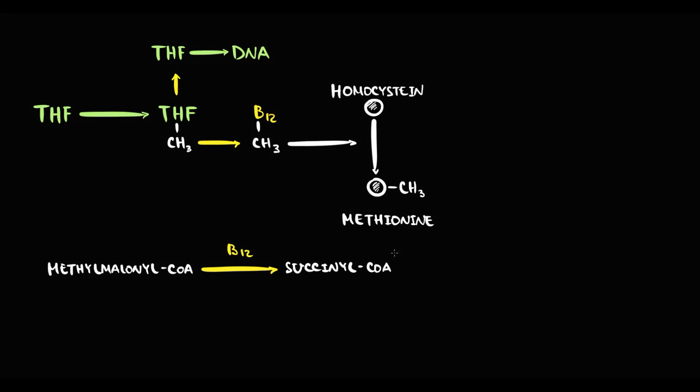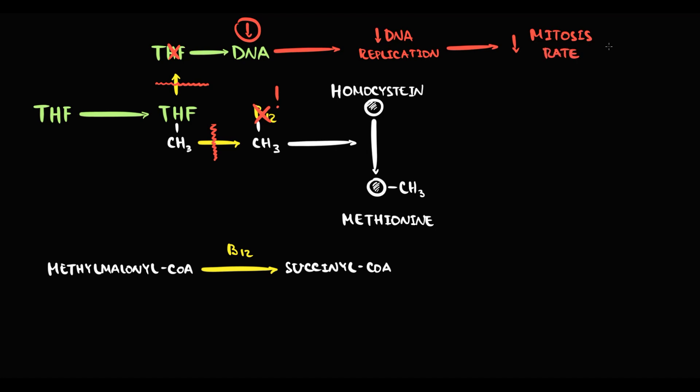So what happens with vitamin B12 deficiency is that without vitamin B12, folate cannot get rid of methyl group. So folate remains methylated and thereby inactive. Without free folate molecule, we cannot produce DNA. Without DNA, we cannot provide sufficient rate of cellular replications. And because red blood cells replicate by mitosis, mitosis rate decreases.